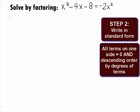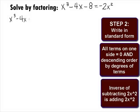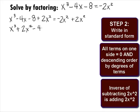It looks like we need to move the negative 2x squared over to the other side. We can do this by adding 2x squared to both sides. When we do this, we get x cubed minus 4x minus 8 plus 2x squared equals negative 2x squared plus 2x squared. This will simplify to be x cubed plus 2x squared minus 4x minus 8 equals 0.